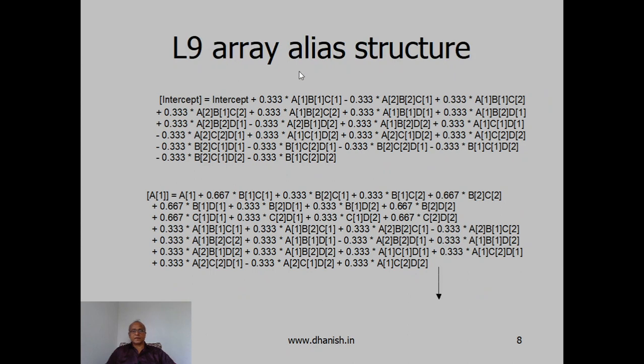Similarly, in the L9 array alias structure, it is highly complex. Here BC, BD, CD are all aliased. We cannot be sure which effect is the really significant one and causing this overall effect. So that is the problem with this three level array structure.